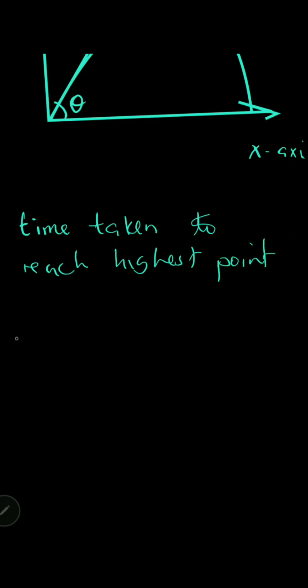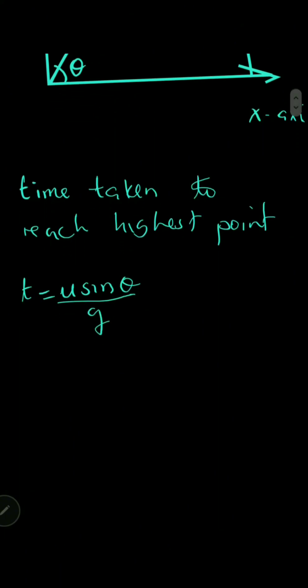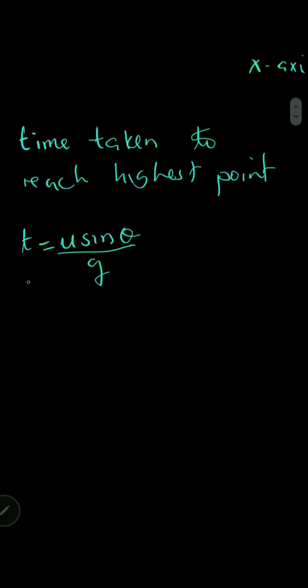So t equals u sine theta over g. This time for the highest point is denoted using small letter t. Now to find the time taken or time of flight, total time is simply multiplying this t by two.